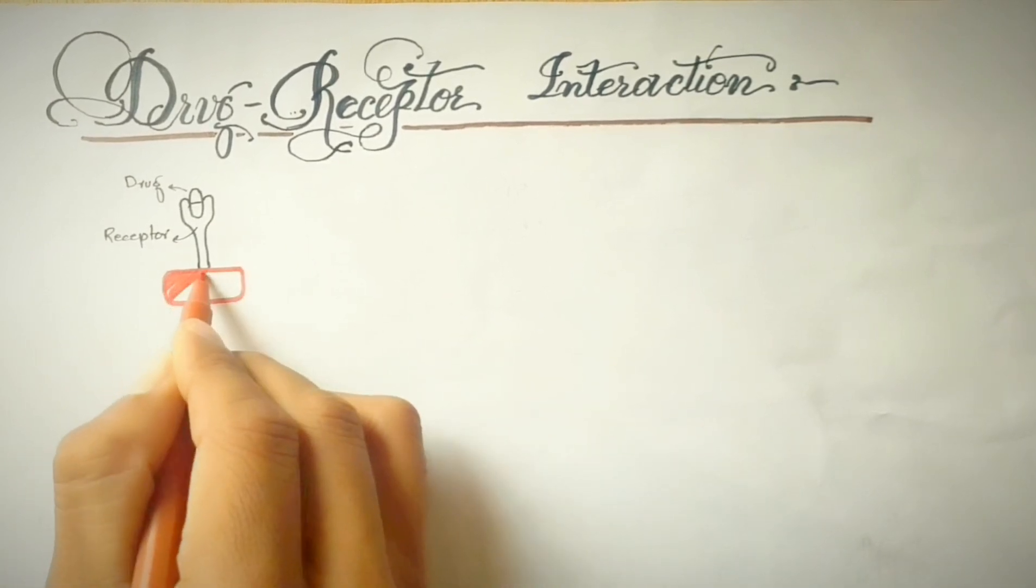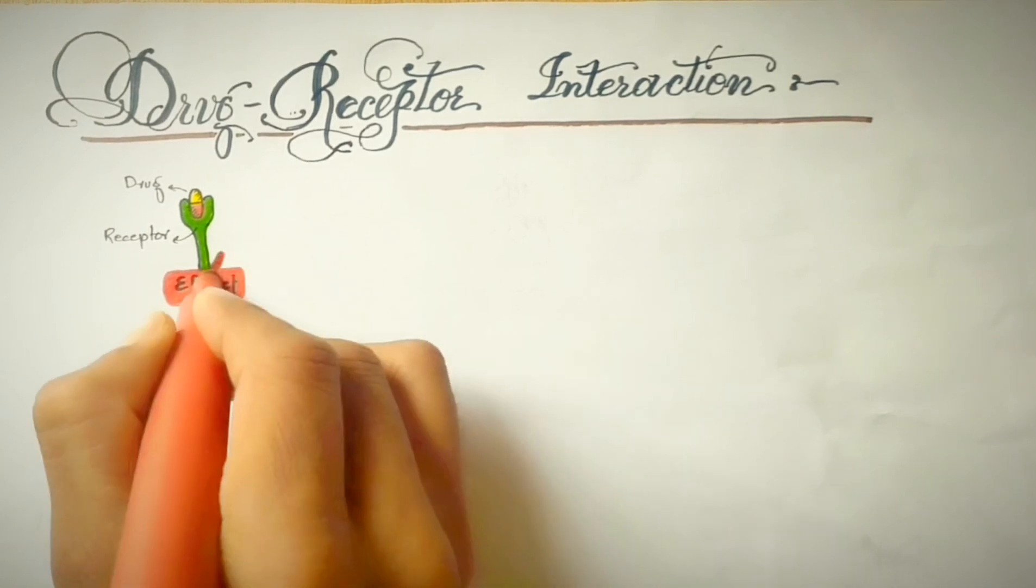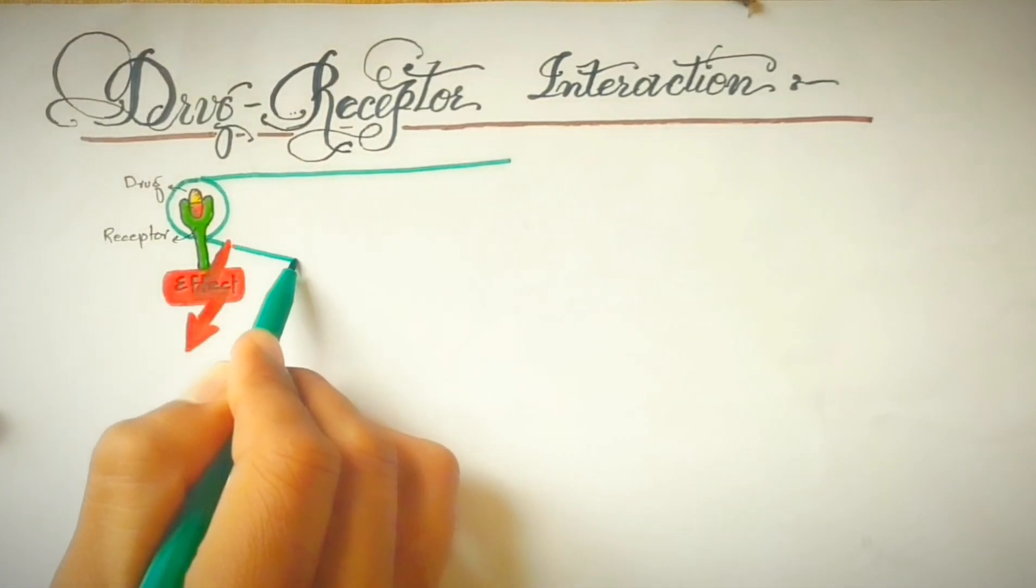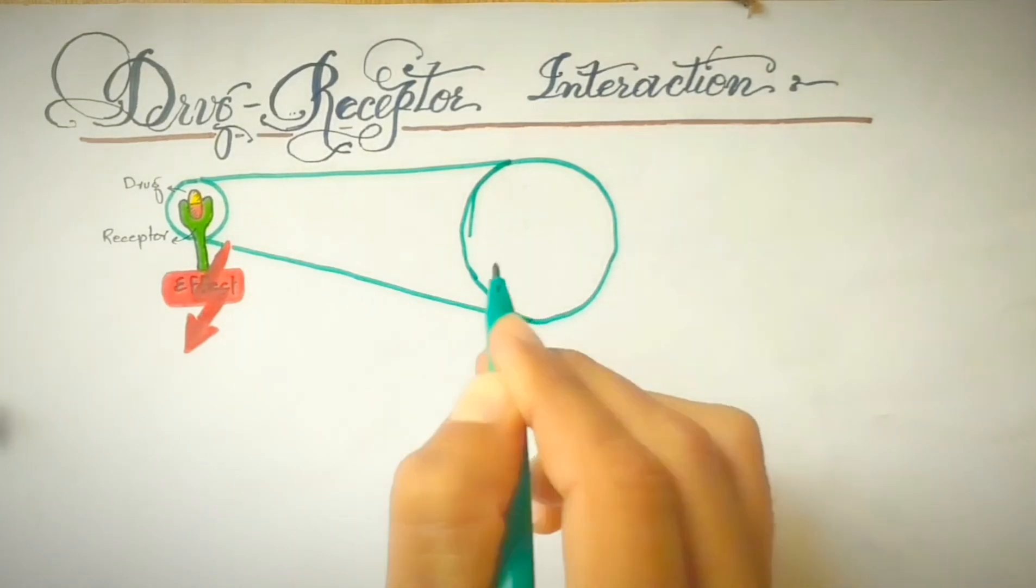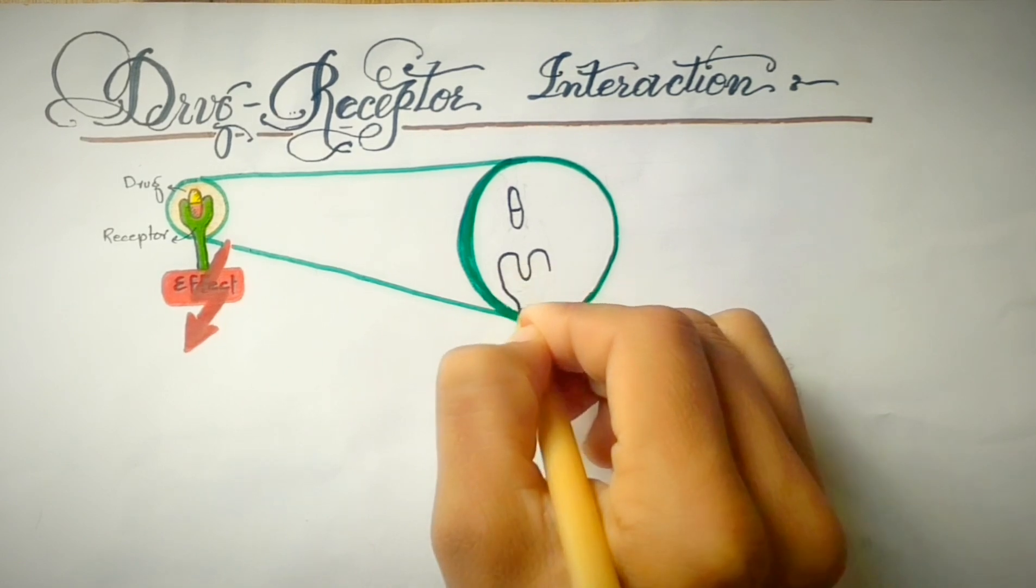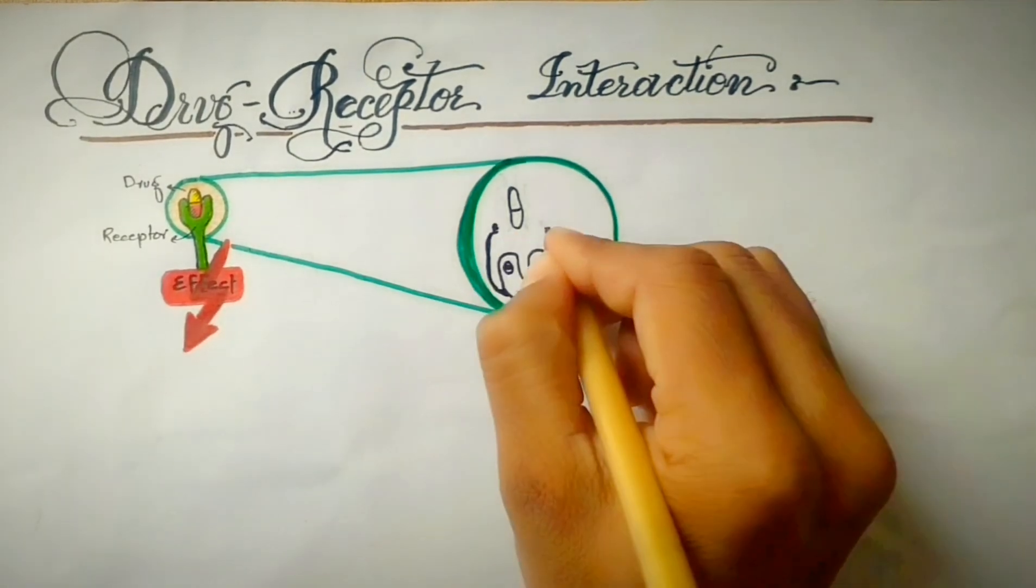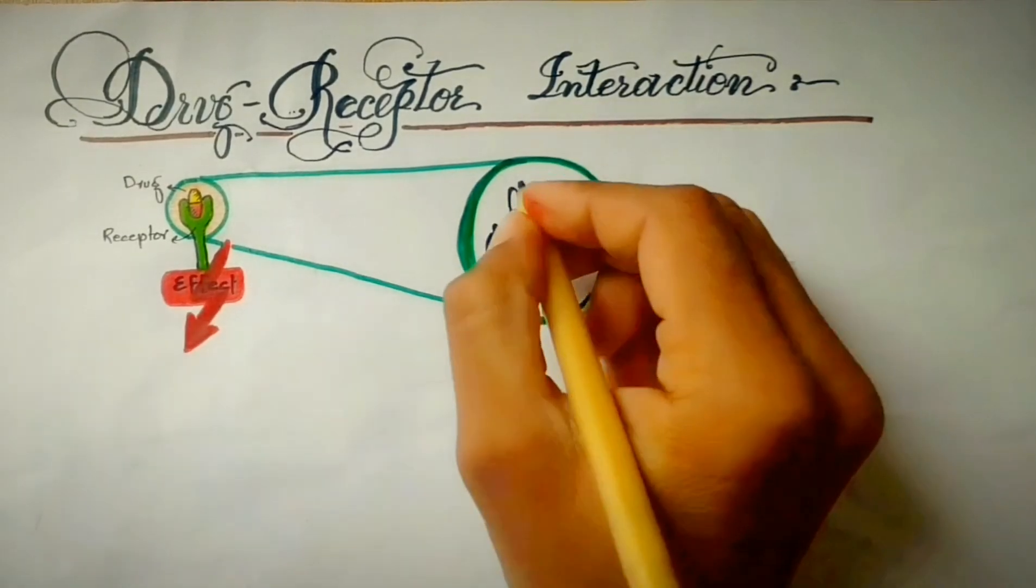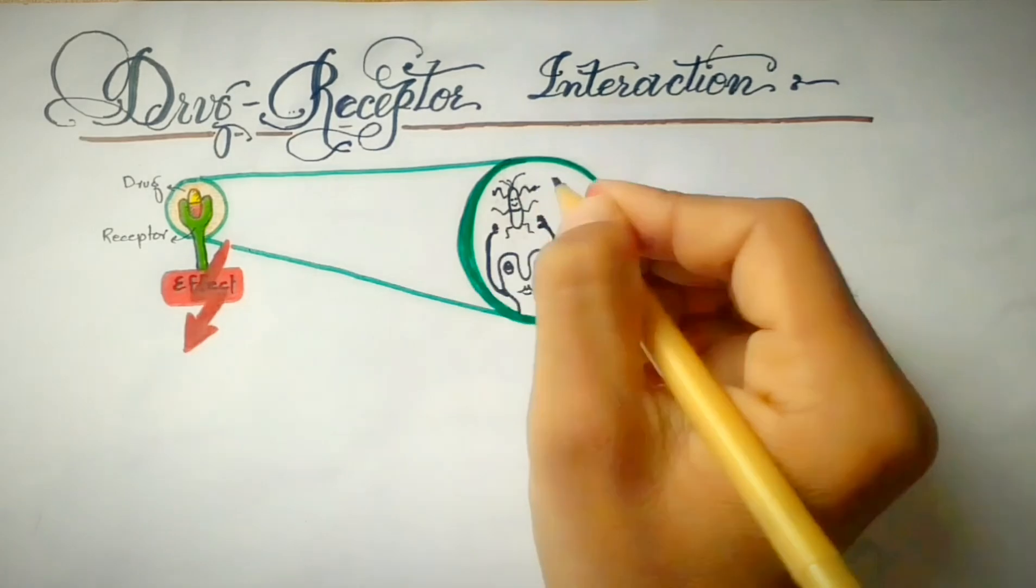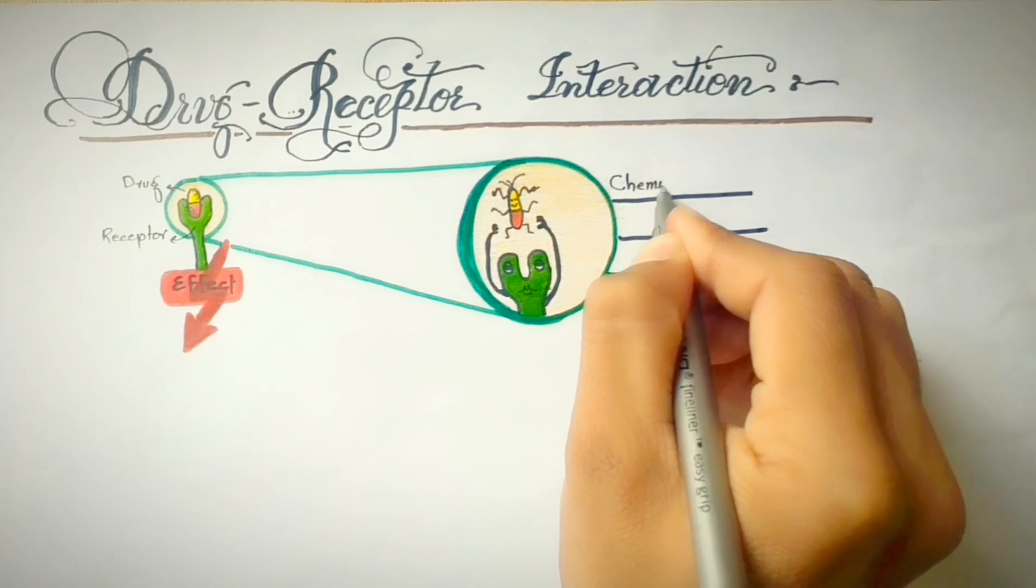First, the drug binds to the receptor and then they form a complex which activates intracellular responses which results in the effect of the drug. So for a drug to show pharmacological action through the receptors, it is necessary for the drug to bind with the receptor by chemical forces or by forming a chemical bond. After formation of the chemical bond, the receptor undergoes conformational changes and thus the receptor is said to be activated by drugs, which is responsible for the drug effect on the body.